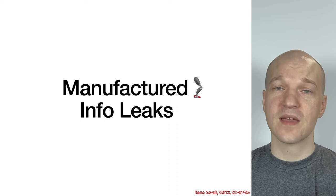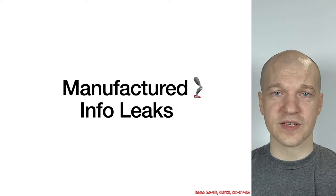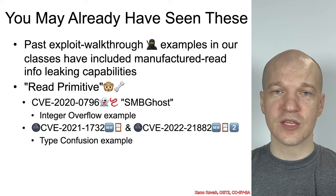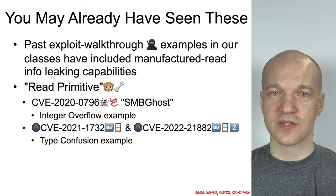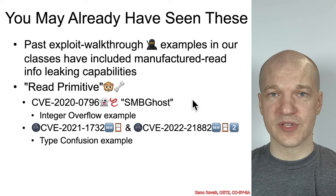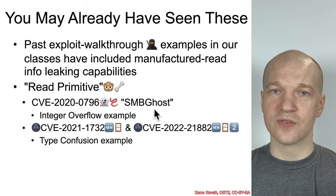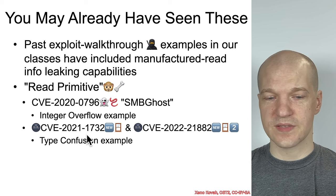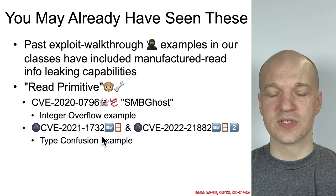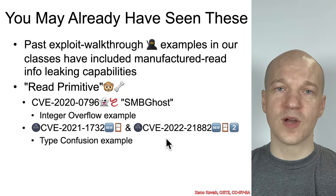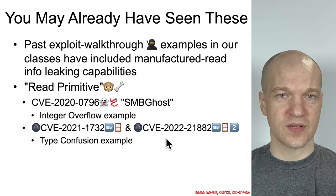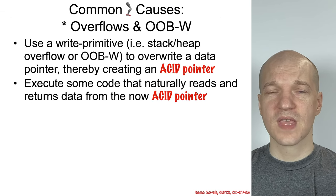These intrinsic infoleaks can happen for all sorts of other reasons — those were just some examples of how they could occur with the bug types we've already learned about. Then of course we have manufactured infoleaks. If you've been watching all of the content, you will have already seen manufactured infoleaks in the context of some exploit explanations — in Vulnerabilities 1001 with the SMBGhost vulnerability, and in 1002 with CVE 2021-1732 and its variant, where the attacker could leak information after successfully corrupting memory and causing a type confusion.